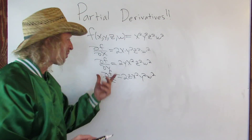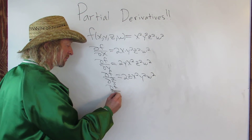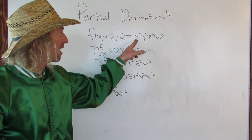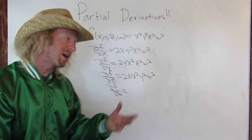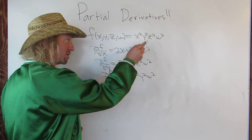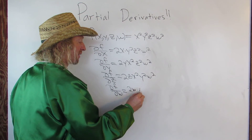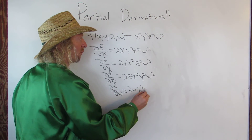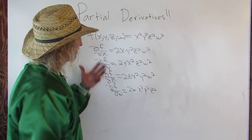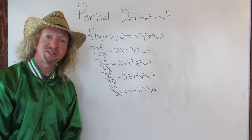And let's do one more: del f del w. In this case, x squared, y squared, and z squared are all constants. So when we take this partial it'll just be 2w, and then we have x squared, y squared, z squared. So that's how you compute partial derivatives — I hope that's made sense. That's it.